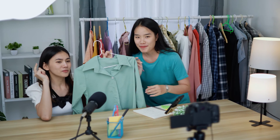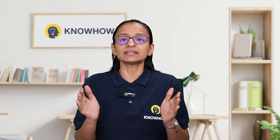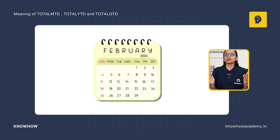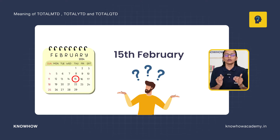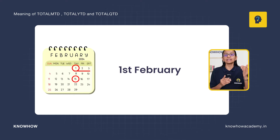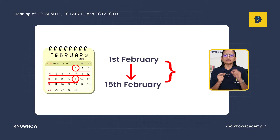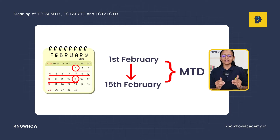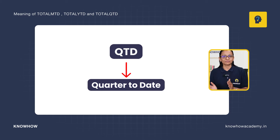Let me explain the MTD function using a real-life scenario. Imagine you are selling products online and you want to know how many products you sold this month. Let's say this month is February and today's date is 15th February. Since the month is not yet over, we start from the first date of February and sum up till today, the 15th. That sum is called Month-to-Date — from the first day of the current month till the current date.